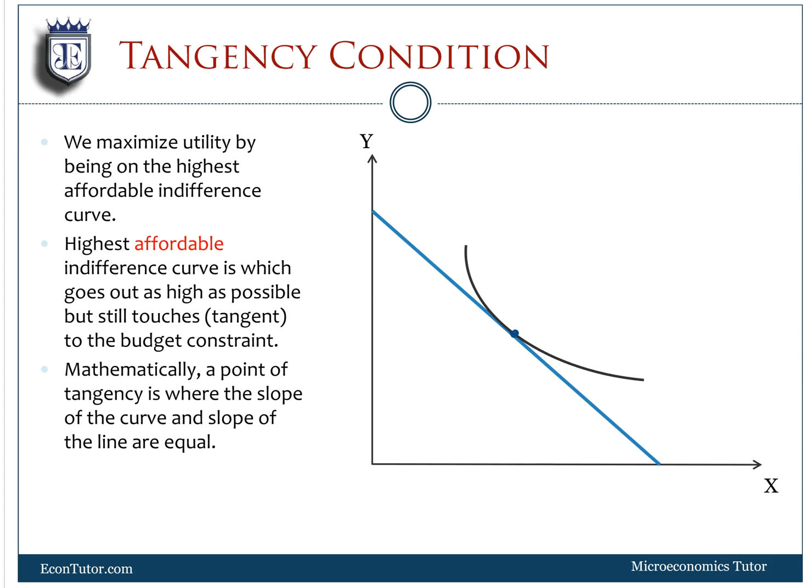Mathematically, a point of tangency is where the slope of the curve and slope of the line are equal. The two slopes we've been talking about - the MRS, which is given as negative MUx over MUy, is equal to the slope of the budget constraint, which is given as Px over Py.